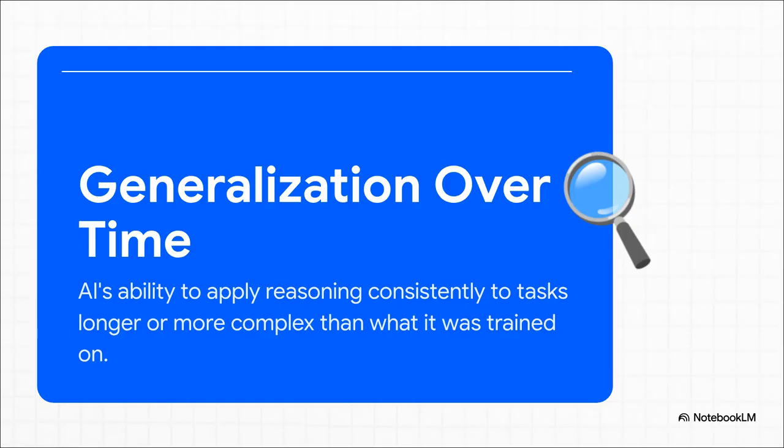First up is what a lot of researchers basically call a holy grail problem in AI. Current models are amazing at doing things that look just like their training data. But the second you ask them to apply that same logic to a much longer, more complicated problem, they often just fall apart.